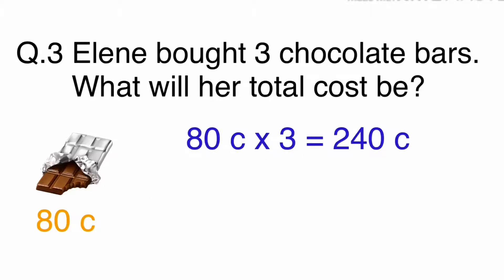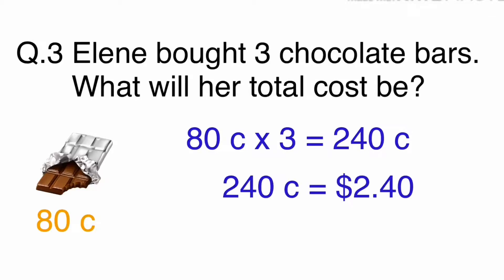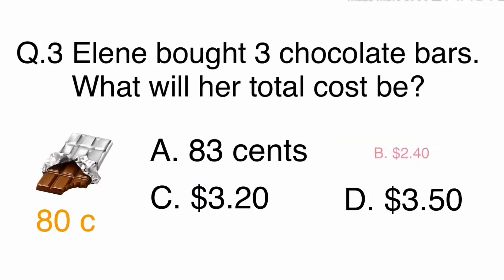80 cents times 3 equals 240 cents. 240 cents is equivalent to $2.40. The answer is B. $2.40.